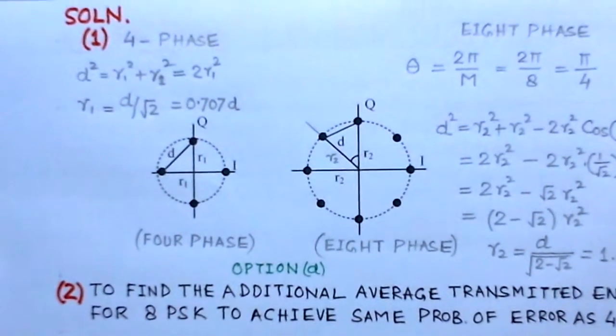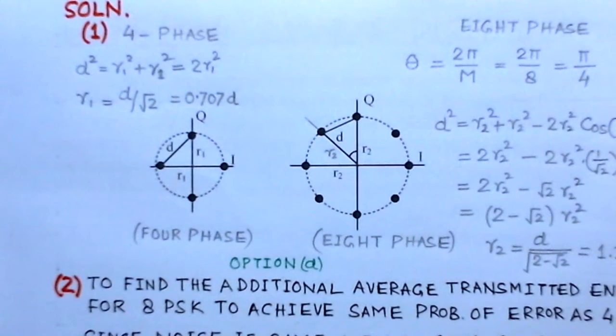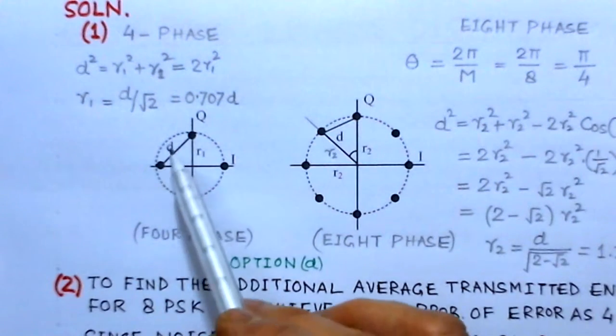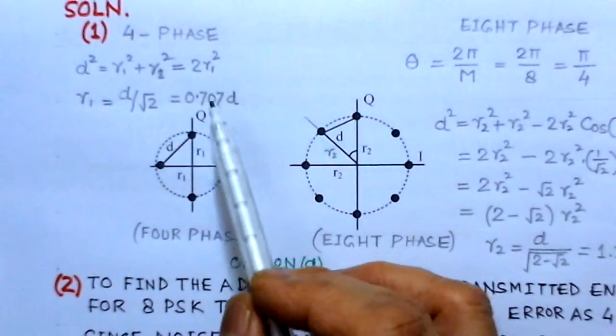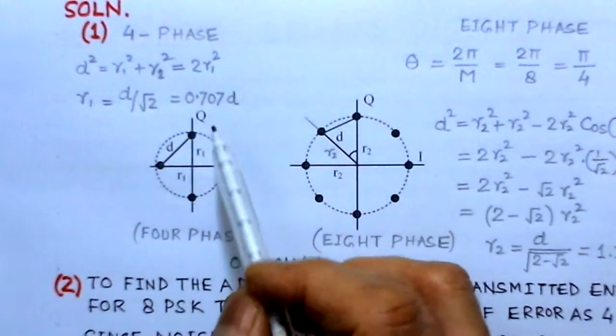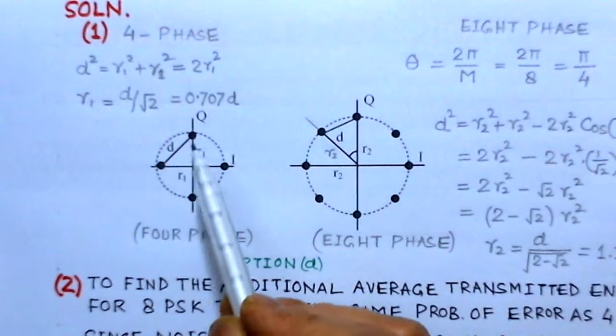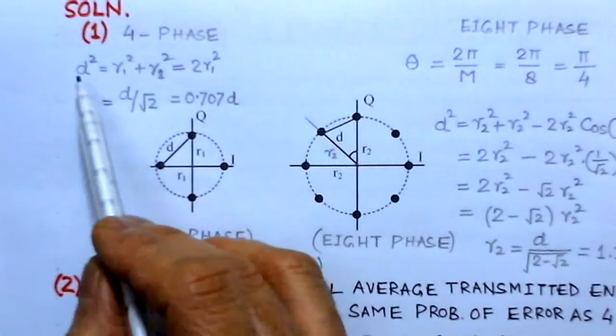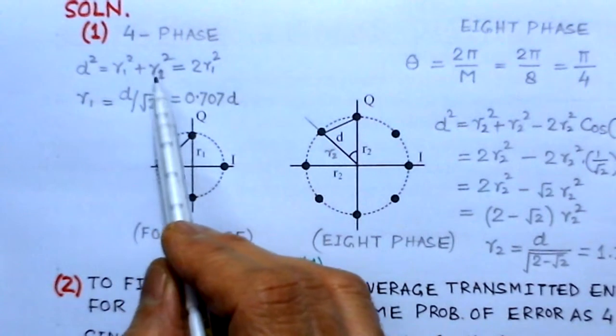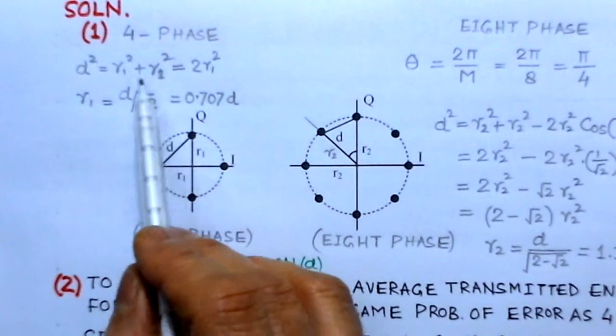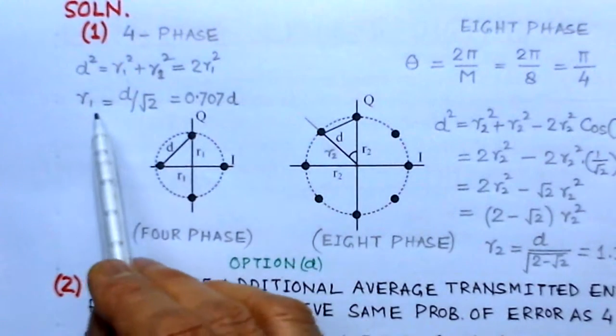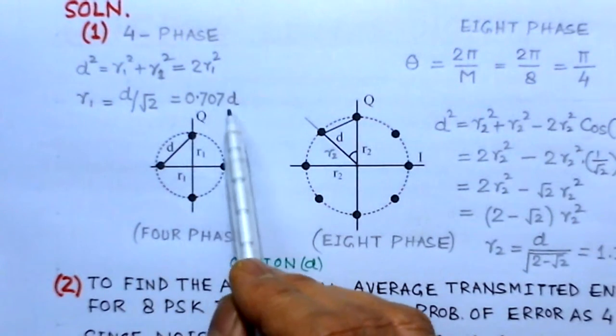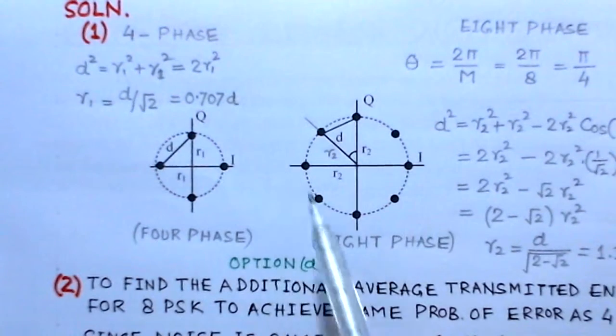We have redrawn these constellations here. For the 4-phase constellation, this is distance d and this is radii r1. You can find the value of d as r1 square plus r1 square, that is 2 r1 square. So you can get the value for r1 as d over root 2, which is 0.707d.